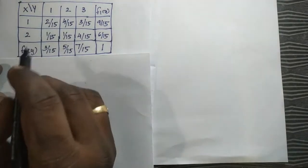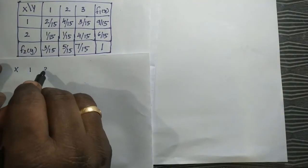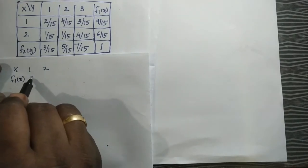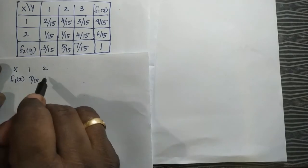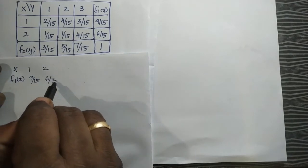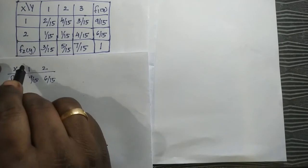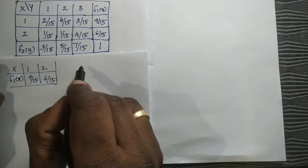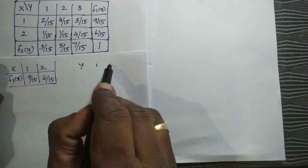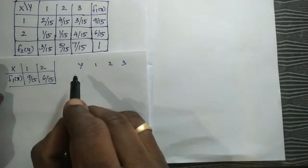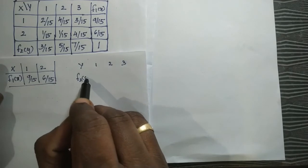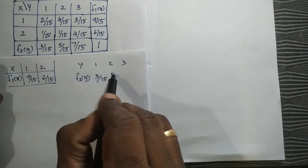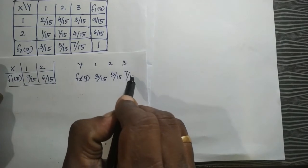F2 of 2 is 7 by 15. F2 of X is the table. X: 1 by 15. F1 of X: 9 by 15 and 6 by 15. Y: 1 by 15, 3a. F2(y) is 3 by 15, 5 by 15, and 7 by 15.